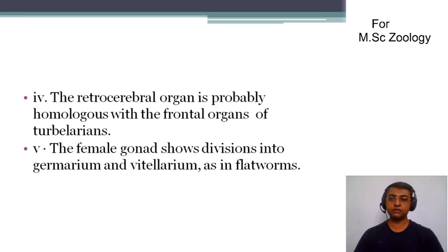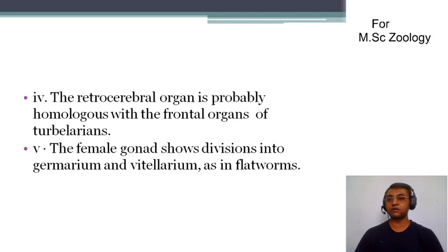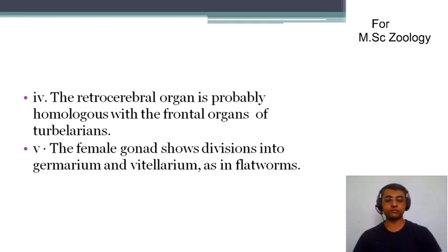The fourth point is that the retro-cerebral organ is probably homologous with the frontal organ of turbellarians. The fifth point is that the female gonads show divisions into germarium and vitellarium, as in Platyhelminthes.